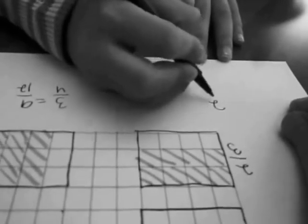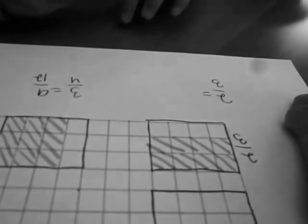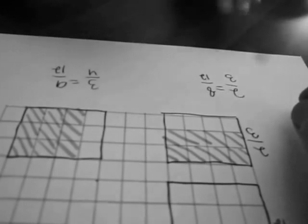And over here, write two-thirds equals, how many boxes did you shade here? Eight. Eight. Eight. So two-thirds is equal to eight-twelfths. So which fraction is bigger? Three-fourths. Three-fourths is bigger. How much bigger is three-fourths than two-thirds? By one. By one what? Twelve. By one-twelfth. Wow. Very nice. Congratulations.